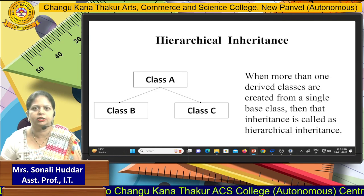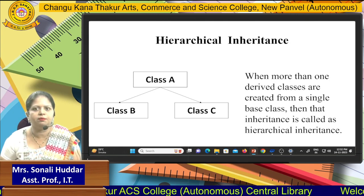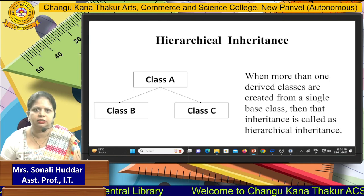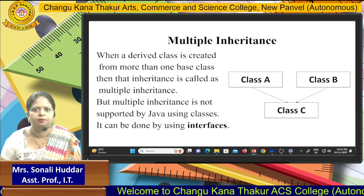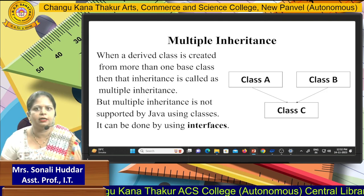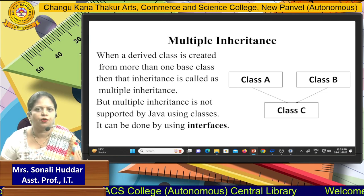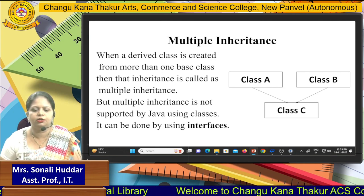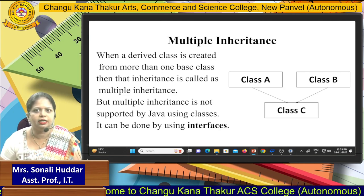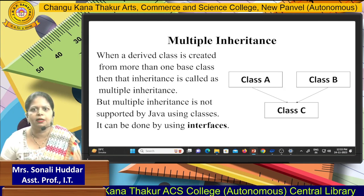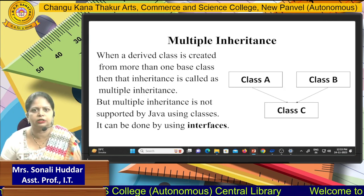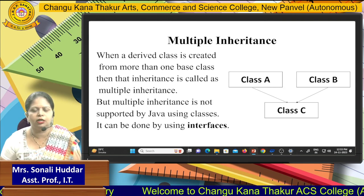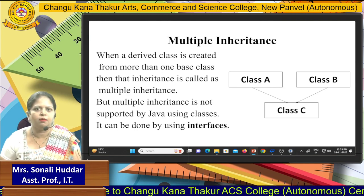The third type is hierarchical inheritance. Here, one base class exists and from that base class you derive multiple subclasses, which creates a hierarchy. The next type is multiple inheritance, where two base classes exist and from those base classes you derive only one single child class. When a derived class is created from more than one base class, that is called multiple inheritance. However, multiple inheritance is not supported by Java using classes — to implement it in Java, you must use interfaces.